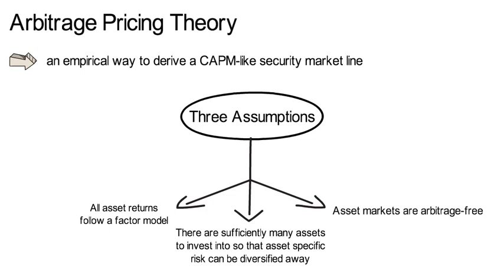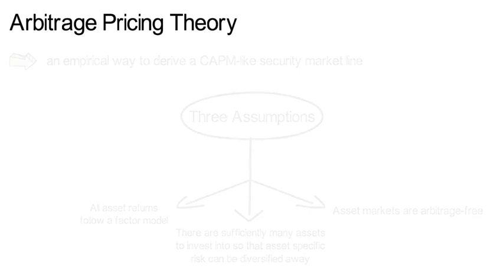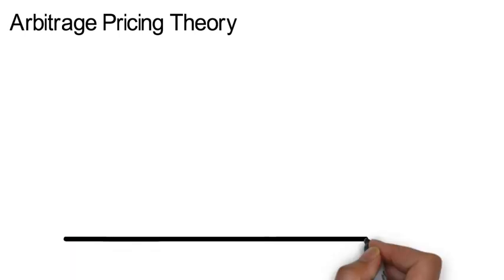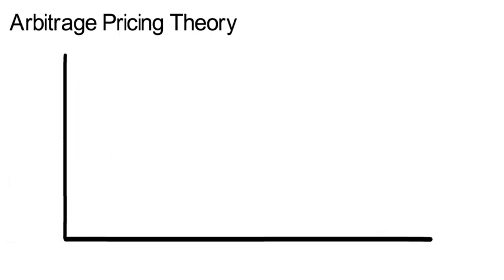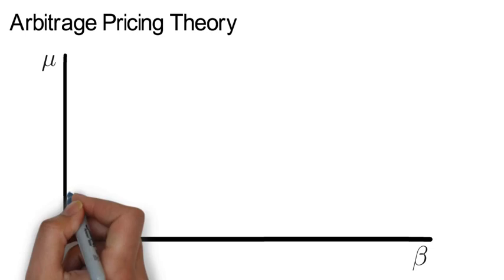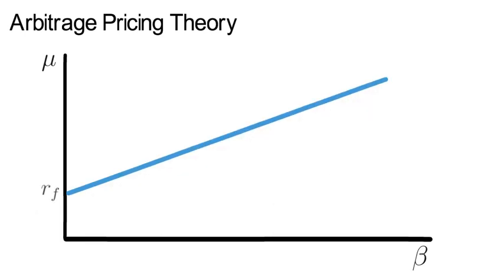Stephen Ross, the inventor of the APT, has shown that if these three assumptions hold, then expected asset returns of well-diversified portfolios increase linearly with the amount of systematic risk. Graphically, it means that expected returns — which we call mu — of well-diversified assets line up on a security market line.